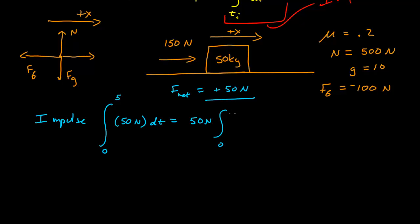The force, which is a constant 50 Newtons, times dt. Well, the 50 Newtons is a constant so it comes out and I get 0 to 5 dt, which is just the time interval. 50 Newtons delta t, which is